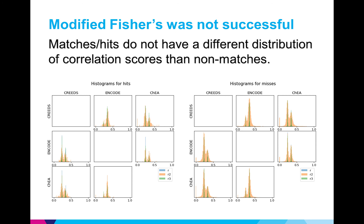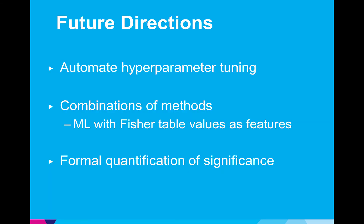But things that I would like to do in the future are come up with a way to automate hyperparameter tuning for the machine learning methods. Combine the different methods in different ways. And finally, it would be nice to formally quantify significance between the different methods instead of relying on a qualitative observation of the bridge plots.